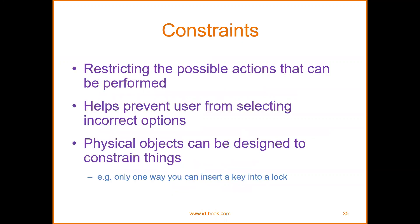Constraints involve restricting the possible actions that can be performed to help prevent users from selecting incorrect options. Physical objects can be designed to constrain things — for example, there is only one way to insert a key into a lock. That is a specific thing to consider: logical or ambiguous design.